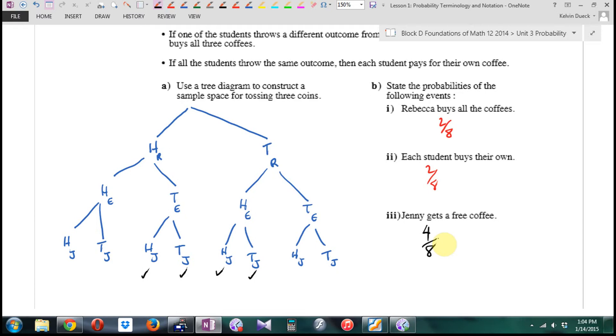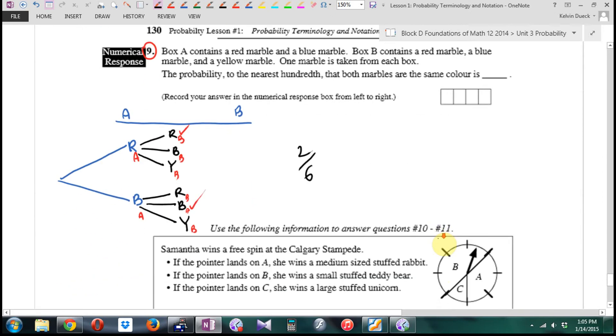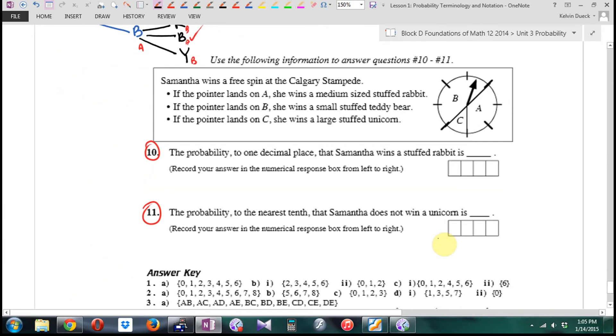Now, I can erase. You guys can't. So maybe now you might scribble that out. Each student buys their own. If all the students throw the same outcome, that's tails, tails, tails, or heads, heads, heads. Also, two out of eight.